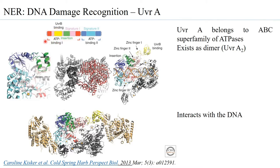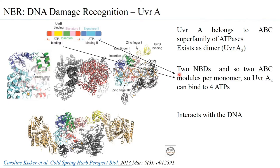Every UVR-A monomer can bind to two molecules of ATP, and when present as a dimer it can bind to four molecules of ATP. UVR-A uses the interplay of ATP binding and its hydrolysis to regulate the process of detecting or recognizing or sensing the DNA damage.